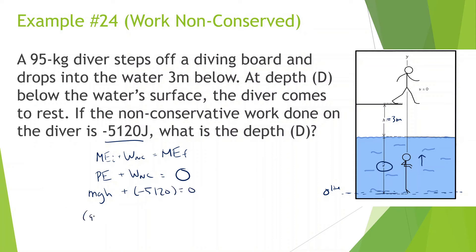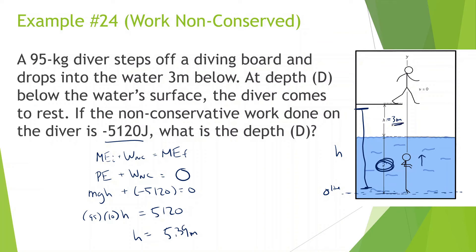Mass is 95, gravity is 10, and H is the total height — the full distance from the board to the stopping point. Moving 5,120 to the other side: 5,120 divided by 950 gives H equals 5.39 meters. But we only want depth d. Since the above-water height is 3 meters, d equals 5.39 minus 3, which gives us 2.39 meters.